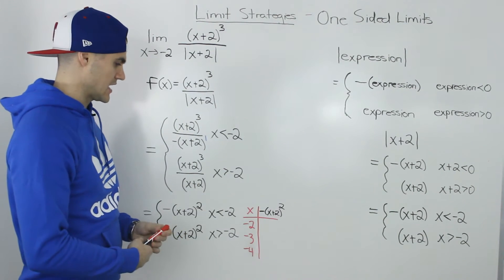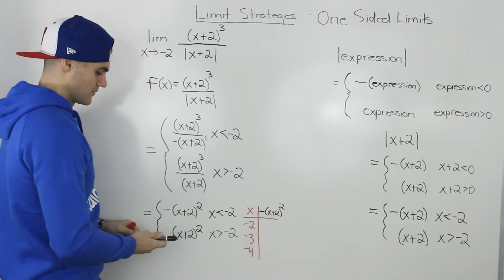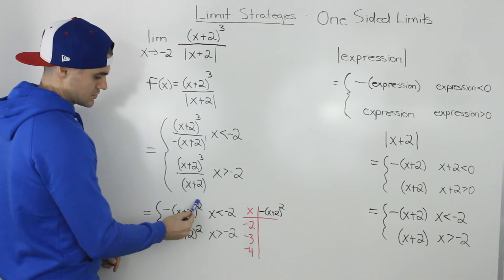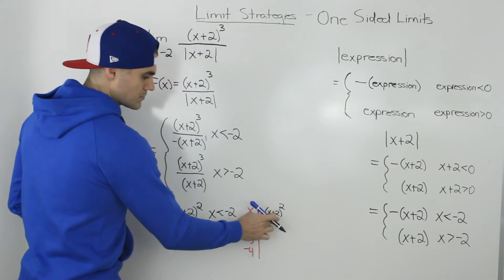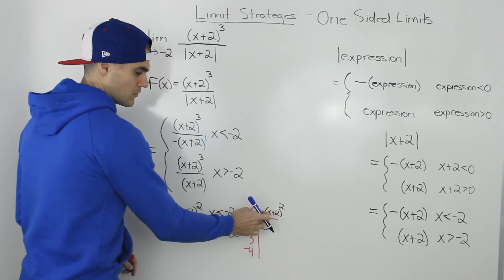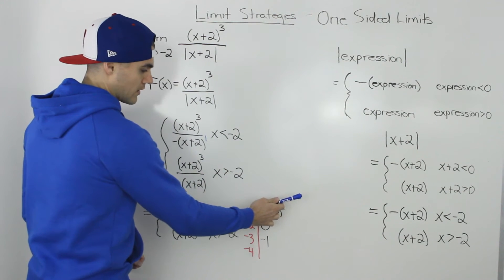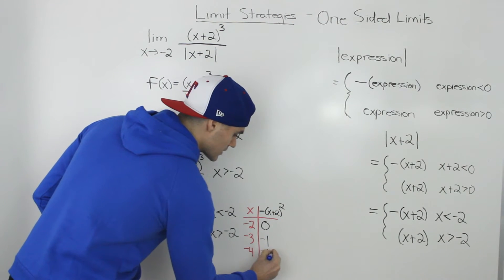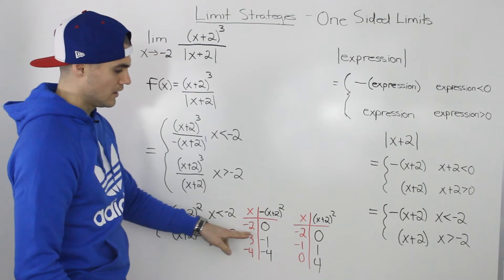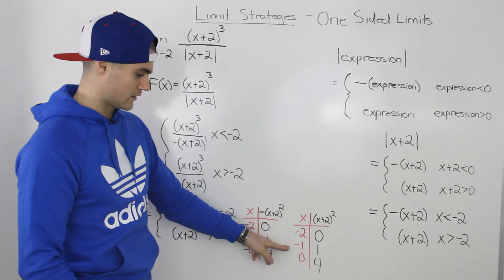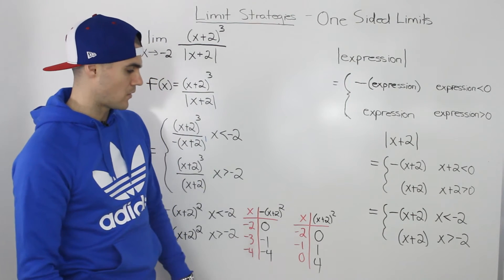To help us graph it, let's make a table of values. For the first piece, picking x values of negative 2, negative 3, and negative 4: negative 2 gives 0 squared times negative 1, which is 0; negative 3 gives negative 1 squared times negative 1, which is negative 1; negative 4 gives negative 2 squared times negative 1, which is negative 4. For the second piece, picking negative 2, negative 1, and 0: plugging into x plus 2 squared gives y values of 0, 1, and 4.